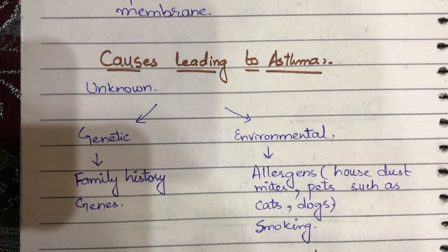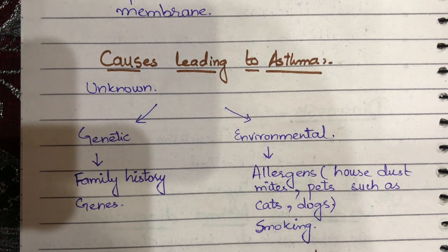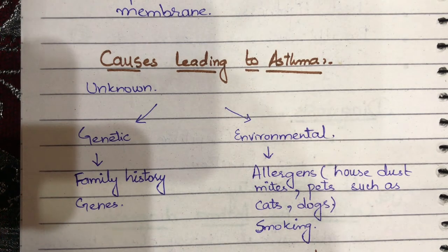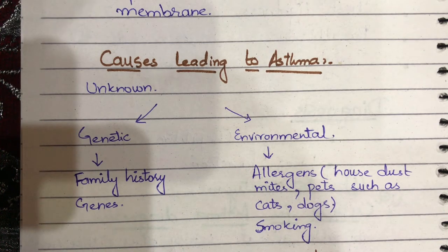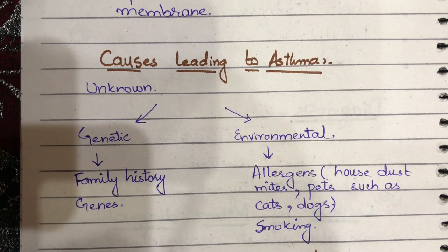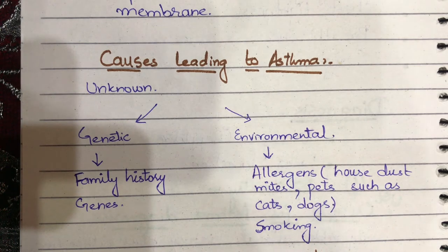Moving towards the causes of asthma: the exact cause of asthma is unknown. We can see different factors that play an important role. We can see genetic factors and environmental factors. Regarding genetic factors, if in the family many people already suffer from the same disease, there is a high chance of asthma. There are certain genes which lead to asthma. Environmental factors most commonly involved are allergens.